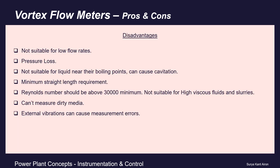Vortex flow meters do have disadvantages. First, they are not suitable for low flow rates, as low flows cannot generate vortices. However, this can be addressed by using reducers. Since flow rate equals area times velocity, reducing the cross-sectional area with a reducer increases fluid velocity for the same flow rate, making it measurable by the vortex flow meter.